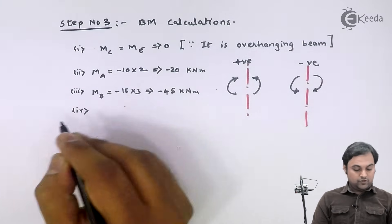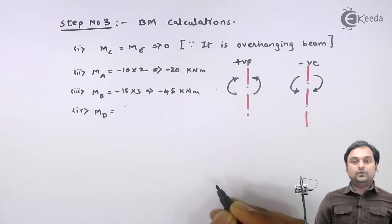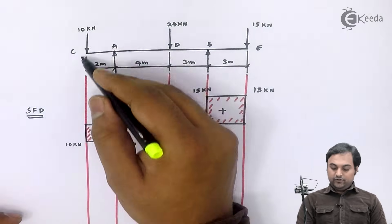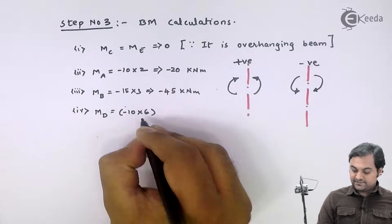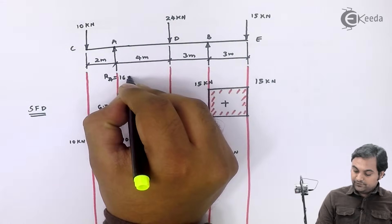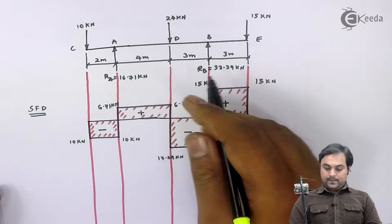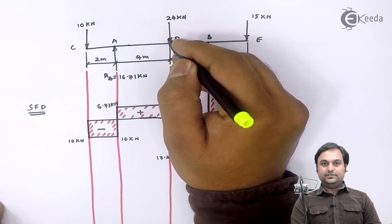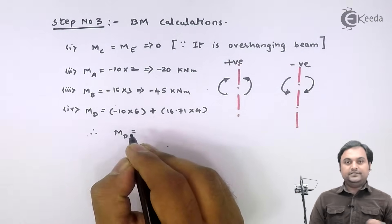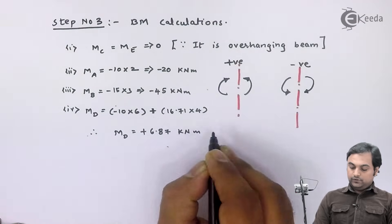Bending moment at point D — taking the left section: 10 kN is anti-clockwise so it is negative, giving minus 10 into 6. The reaction at A is 16.71 kN, which produces a clockwise moment to the left, so it is positive: plus 16.71 into 4. Therefore, bending moment at D equals plus 6.87 kNm.